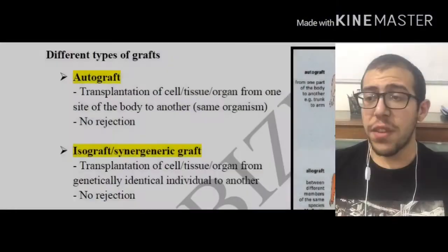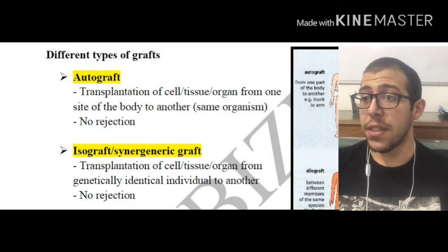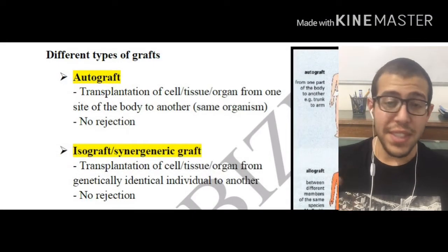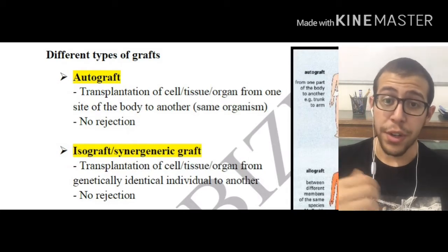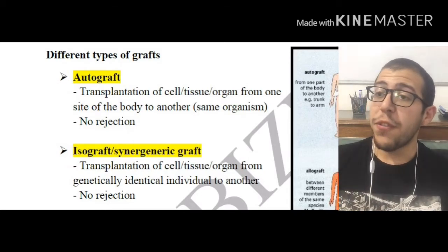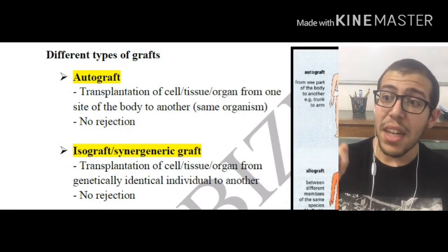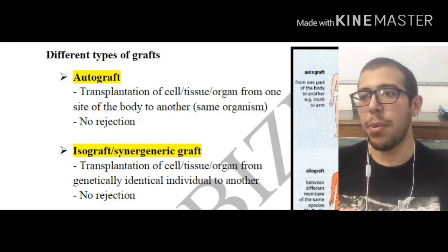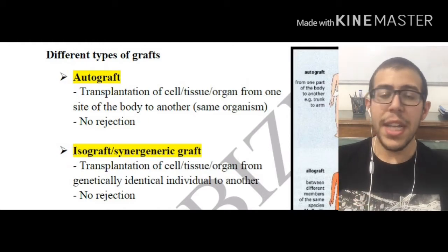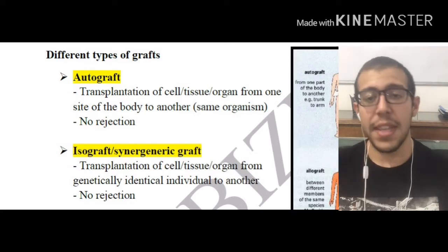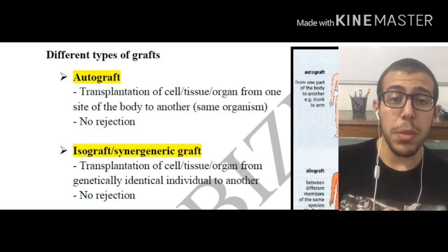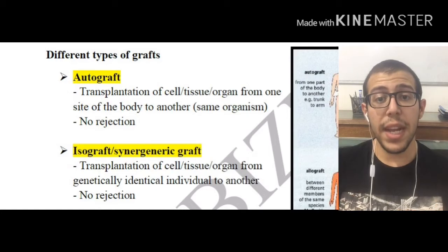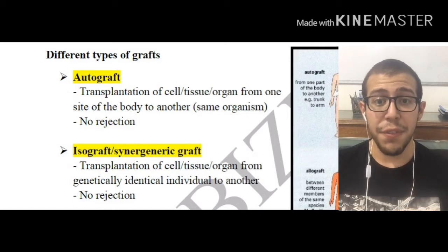First of all, let's take a look at autografts. With autografts, the transplantation of the cells, tissues, or organs — grafts in short — are going to be from one side of the body to another of the same organism. This is incredibly important. No rejection is going to be taking place, because our immune system will be able to recognize these cells as self.